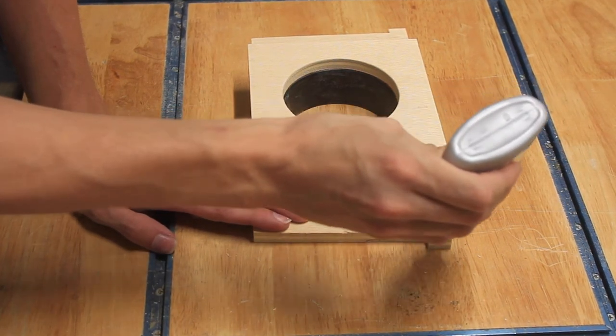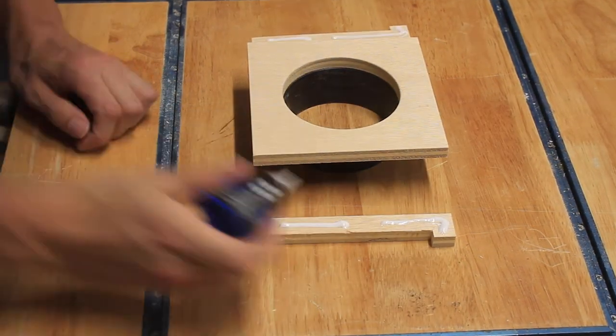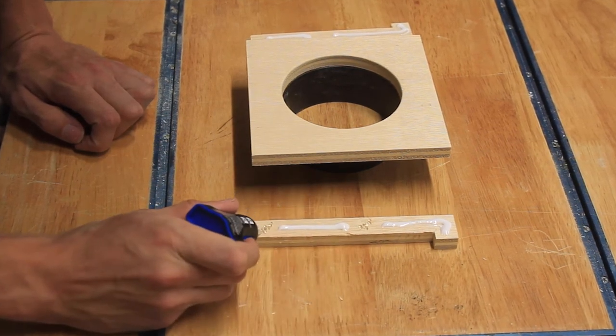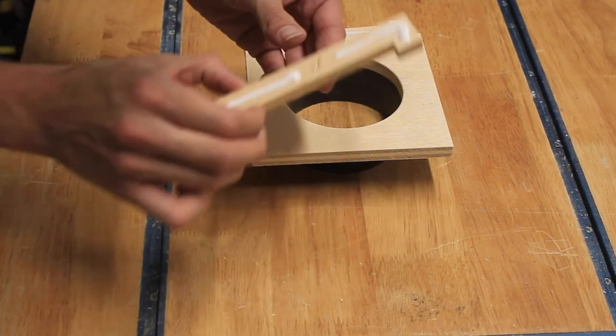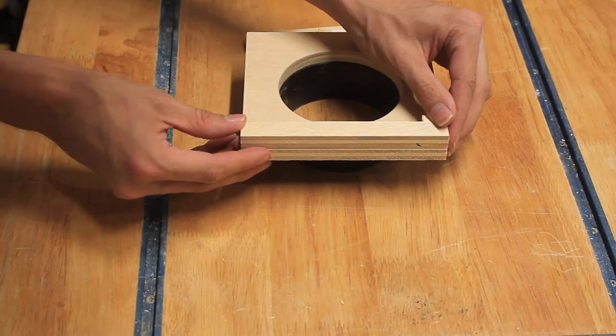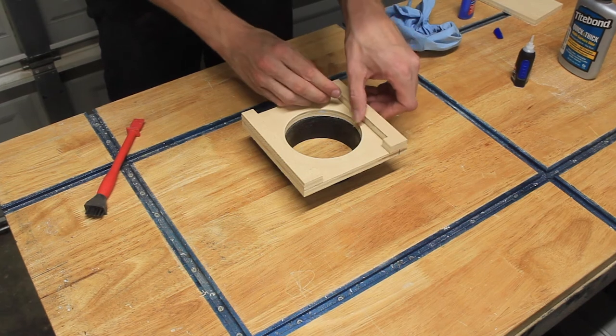Now I can start the glue up. I used Titebond Quick and Thick for all my shop projects. I once again used my superglue trick to achieve an instant adhesion with my parts, so I can continue the build without worrying about the full dry time of my wood glue.